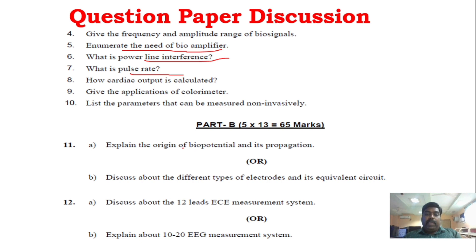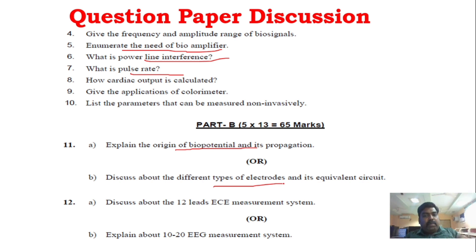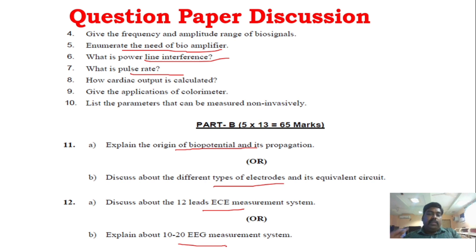In Unit 1 Part B: origin of biopotential and different types of electrodes — as mentioned, there are 2 questions in the unit. In Unit 2, ECG as well as EEG are the 2 measurements to focus on — with diagrams for both.